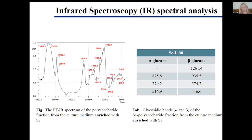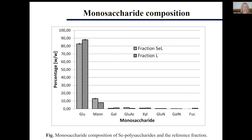Regarding the structural analysis, we examined both samples using IR spectral analysis. Both alpha and beta glycoside bands were detected; however, the intensities of the characteristic beta bands were much higher than those of alpha glucans, as visible in the spectra. The monosaccharide composition was also determined for the selenium-enriched polysaccharide fraction and the reference fraction. In both fractions, the main monosaccharides were mannose, glucose, and galactose.